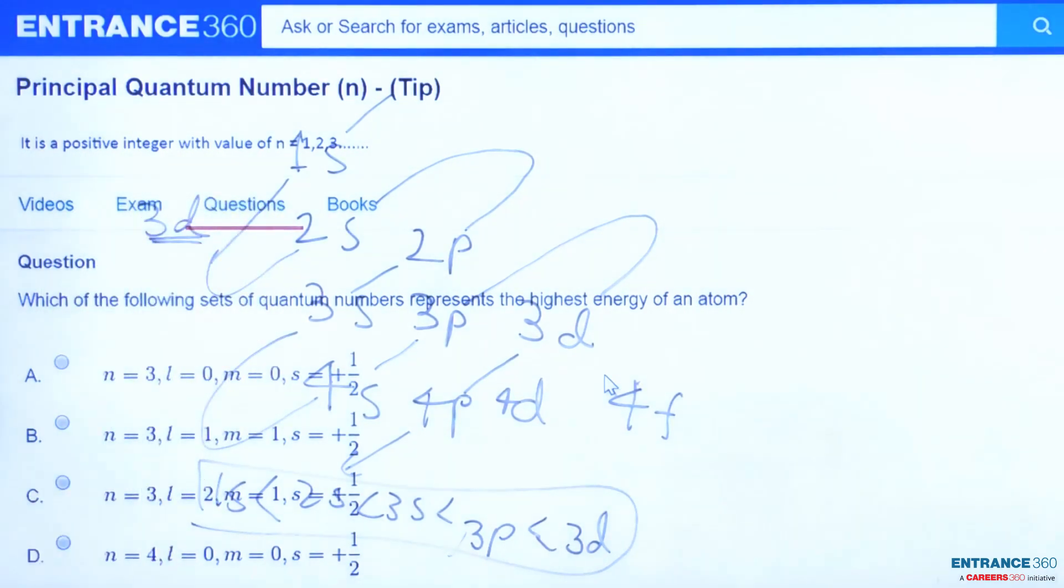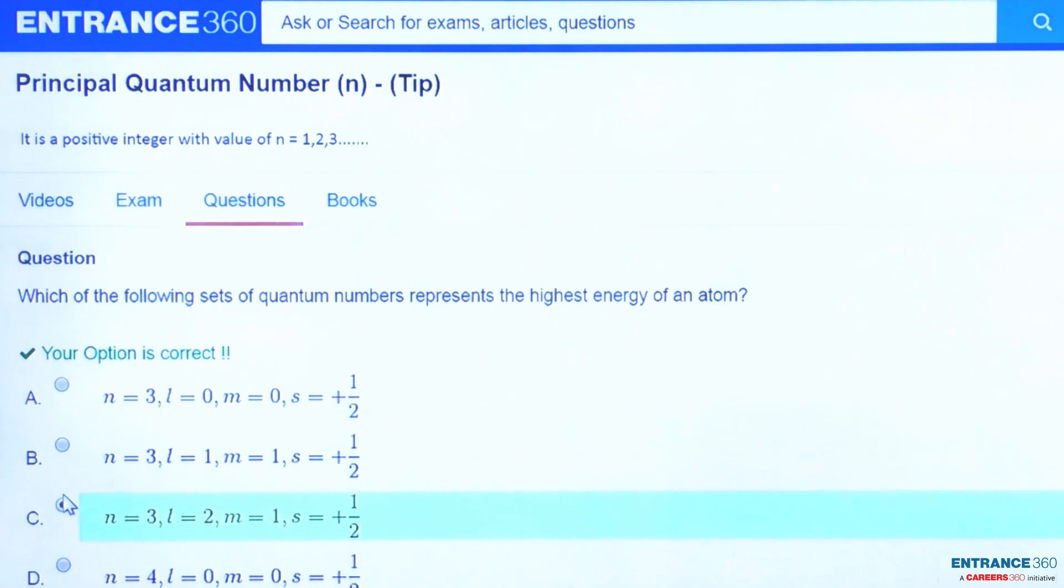And this will contain the highest amount of energy among each atom. So now we will check for the correct option. From the given options we can see that C is our correct option.